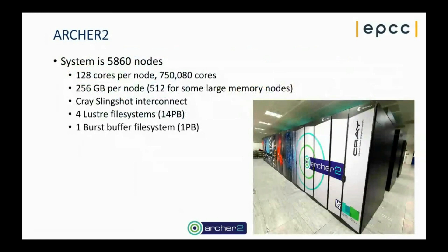ARCHER2 doesn't look hugely impressive but it's actually a relatively big system — about 6,000 compute nodes, each with 128 cores, giving us about three quarters of a million CPU cores. Each node has 256 gigabytes of memory, although there are some larger memory nodes that go up to 512 gigabytes per node for people who need higher amounts of memory per compute core.